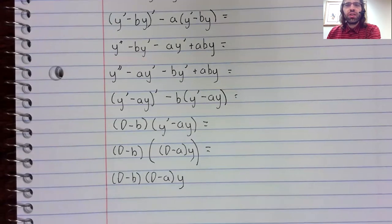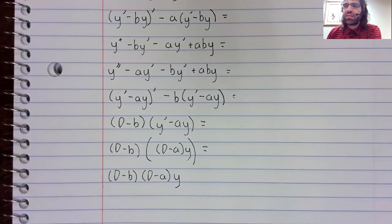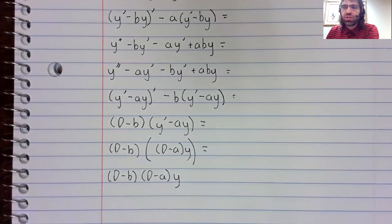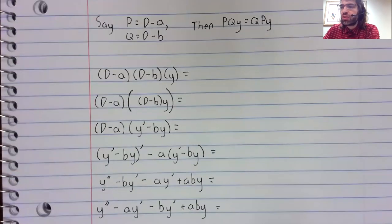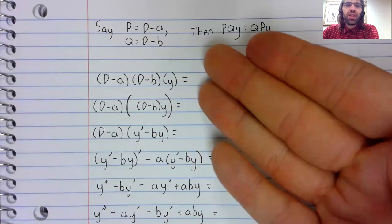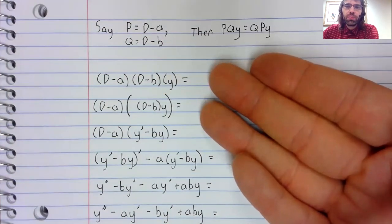Now, in addition to the theorem itself, there's kind of a takeaway message from this. I kept emphasizing that we had this stuff that looked like multiplication but isn't multiplication. So this is composition, not multiplication.